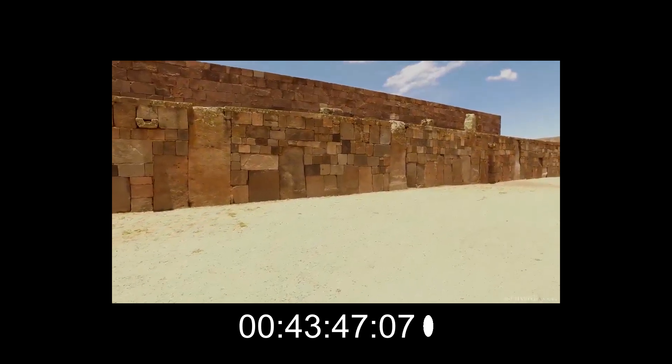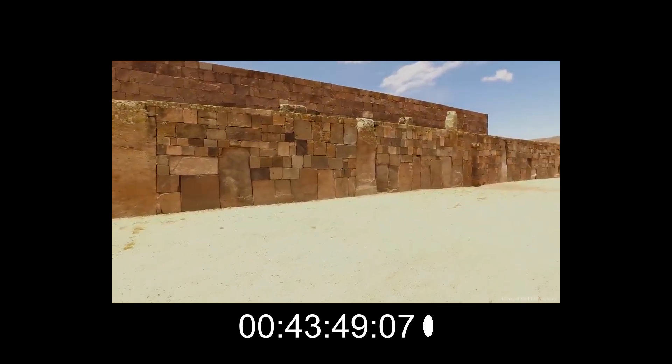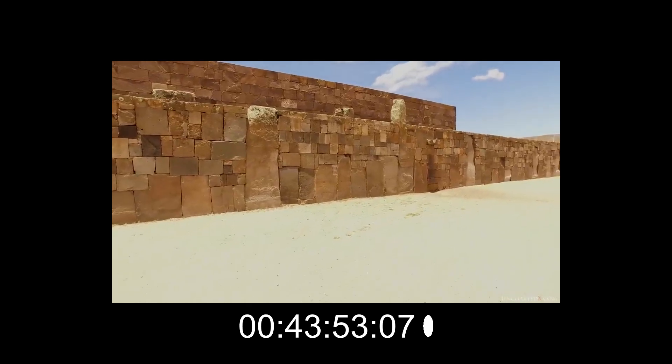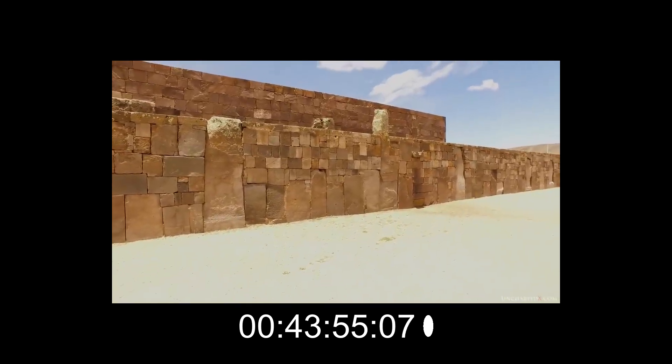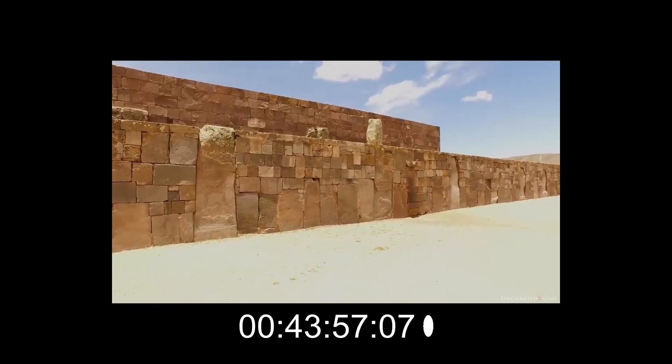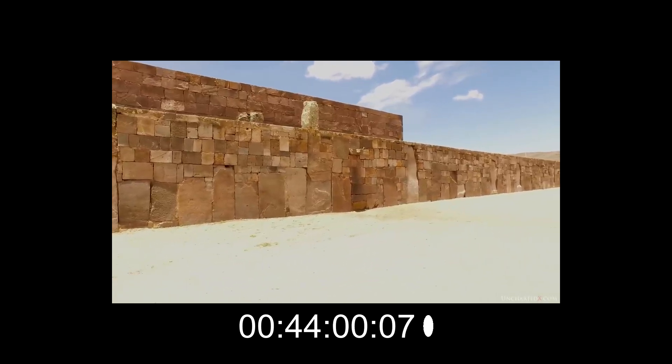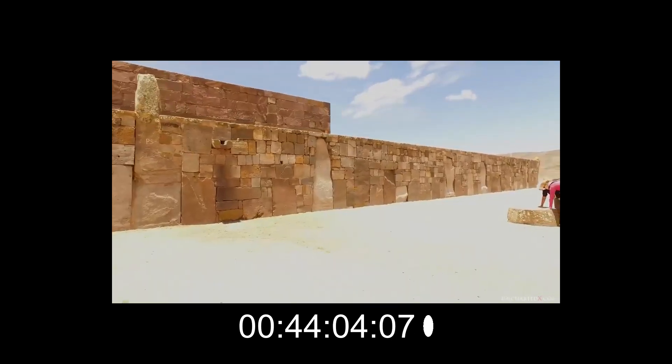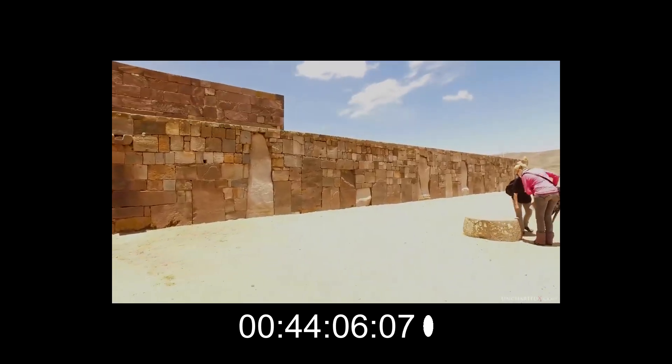The primary method that Posnansky used to pin a date of 15,000 BC to the second period at Tiwanaku was astronomical dating, based on changes in the obliquity of the ecliptic, analyzing the alignment of the solar observatory known as the Kalasasaya to the precise locations on the horizon of the sunrise during the solstices.